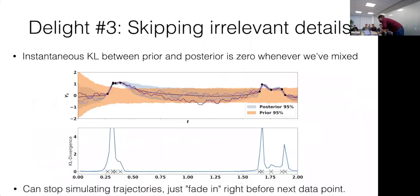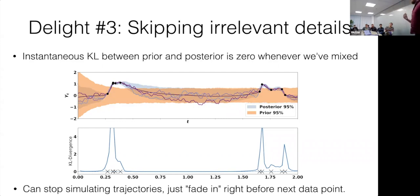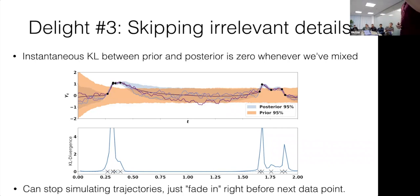One thing I'm excited about for scientific applications: recall that the KL between data points is zero — at least until you need to start thinking about the next data point. So why actually simulate the trajectories in between? If I want the joint likelihood of an infant's heartbeat a month from now, I'd normally have to simulate a million heartbeats in between. But if I know the stationary distribution a month from now, I can skip all that because the KL is zero, estimate how long it takes to unmix, then sample from the conditional and start again. It's like skipping the boring details.